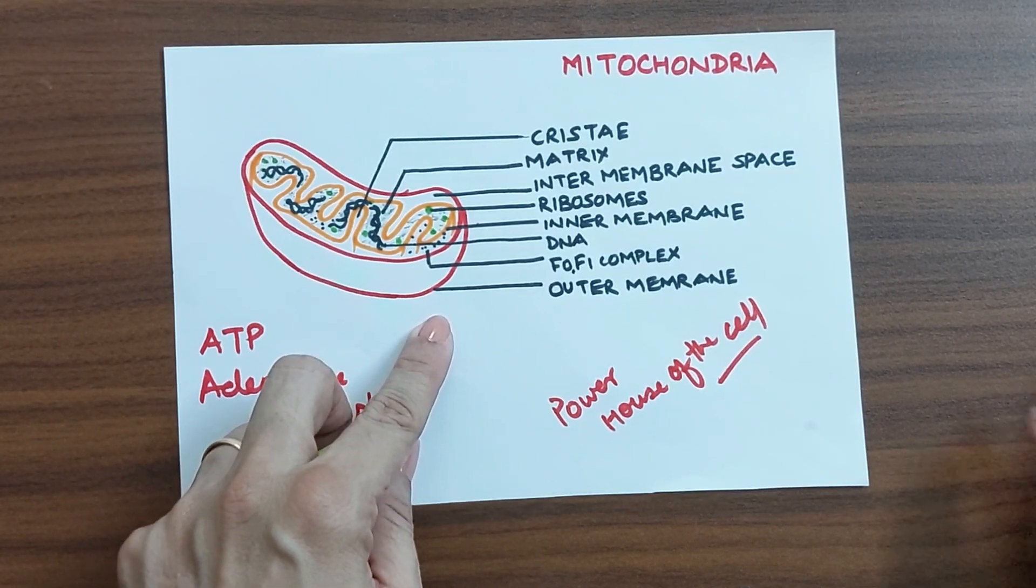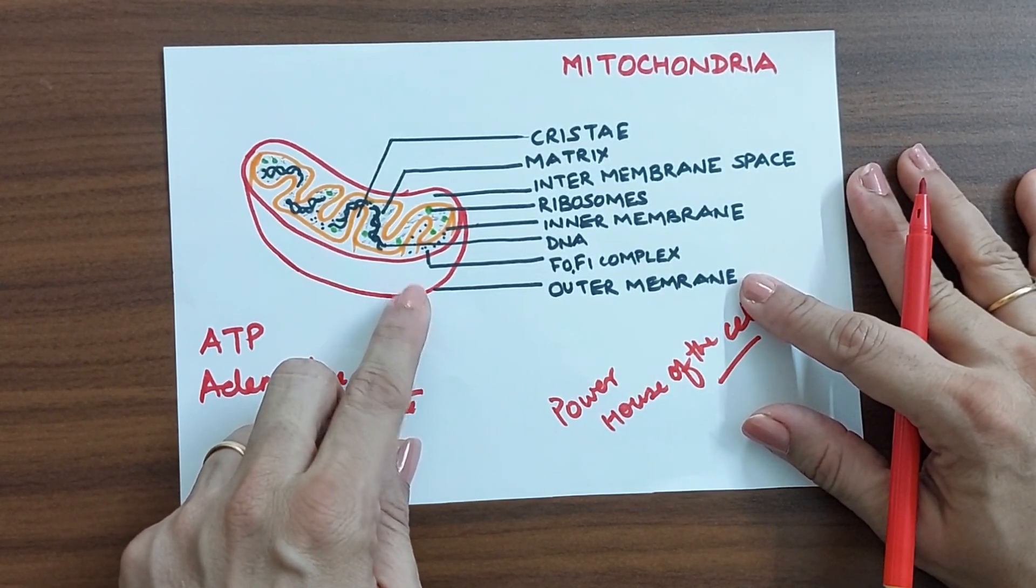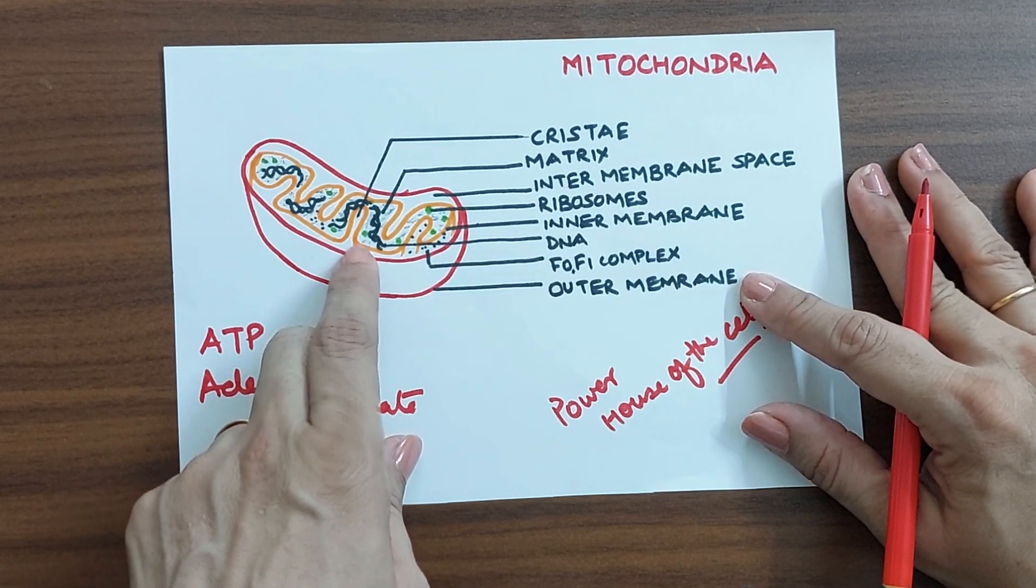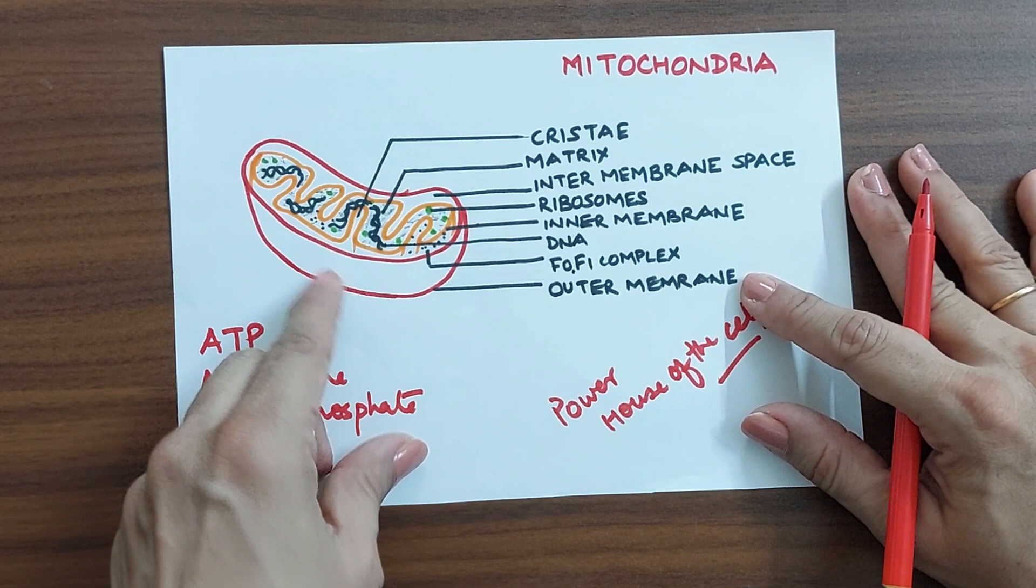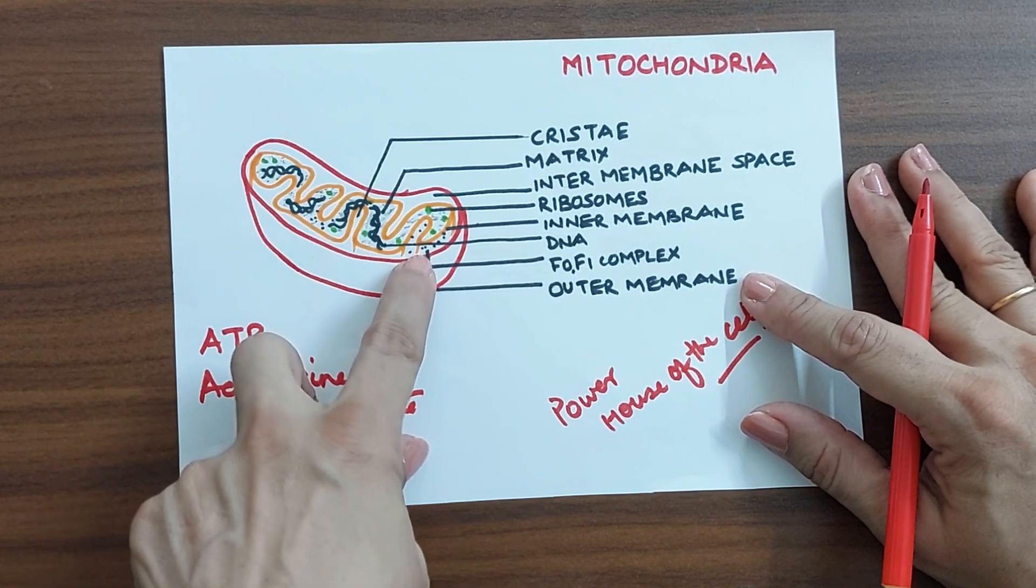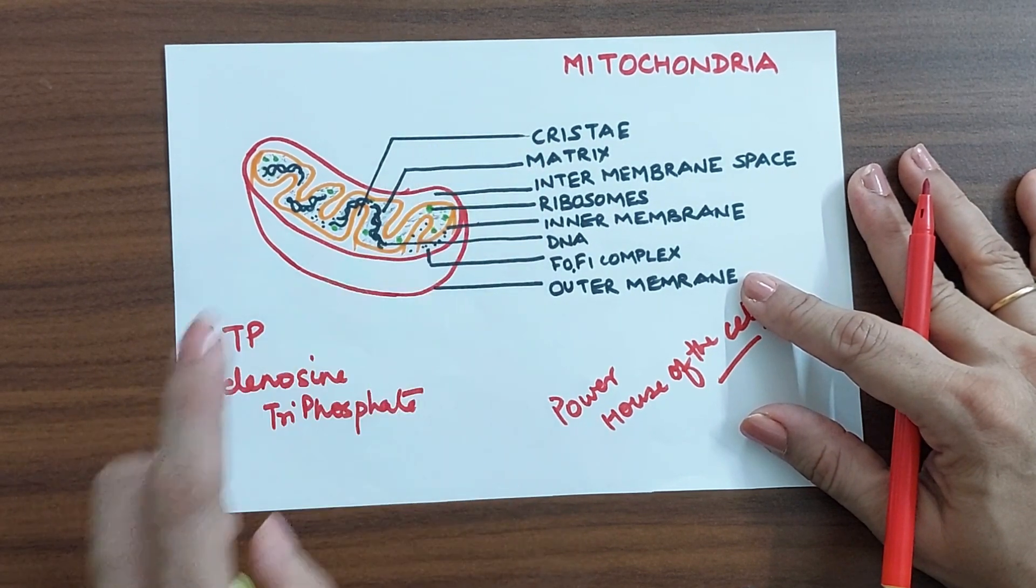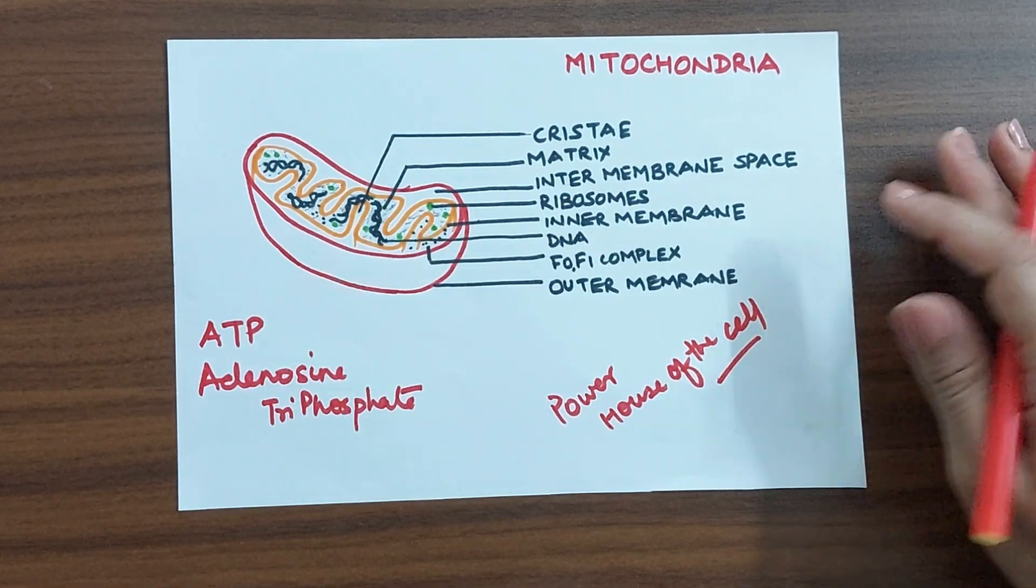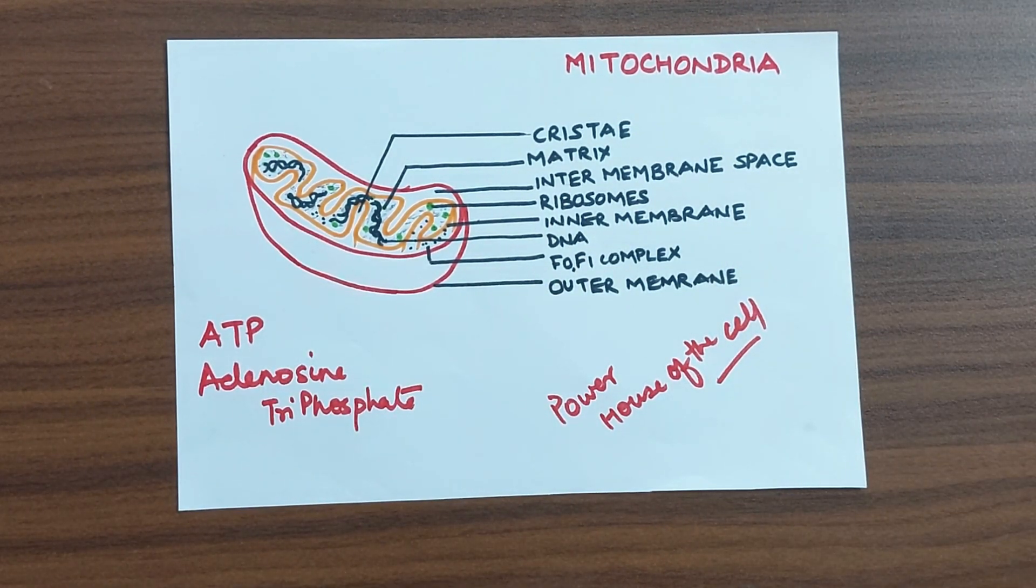In my diagram here, you can see that the outer membrane, I have made it in red color for you to understand easily. The inner membrane is the orange one. So the outer membrane is smooth. Whereas the inner membrane has these finger like structures which are known as cristae. So on these cristae are the F1 complex wherein the cell respiration takes place.